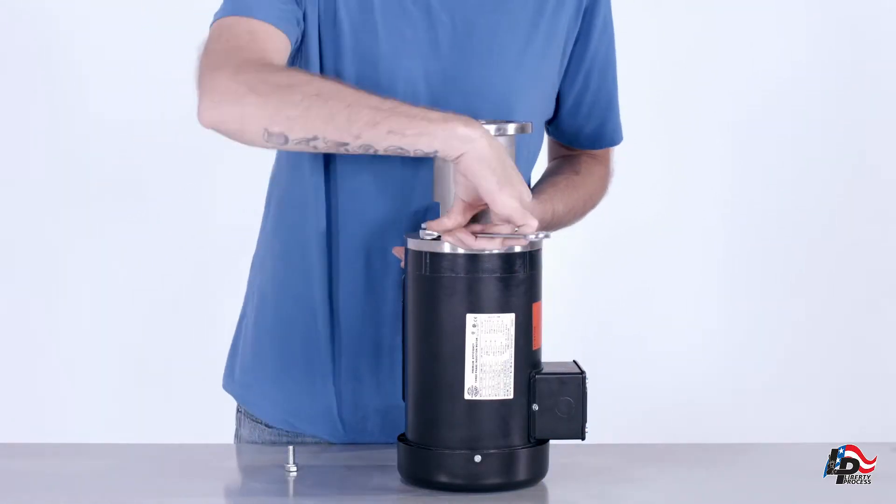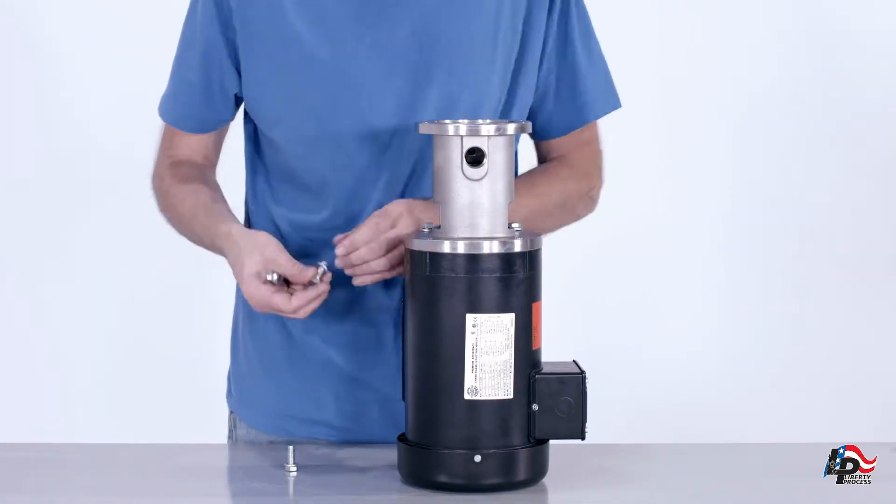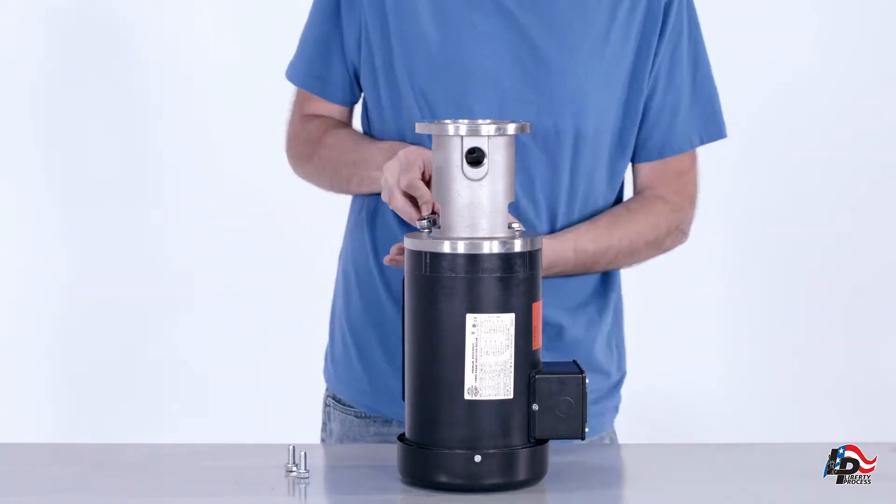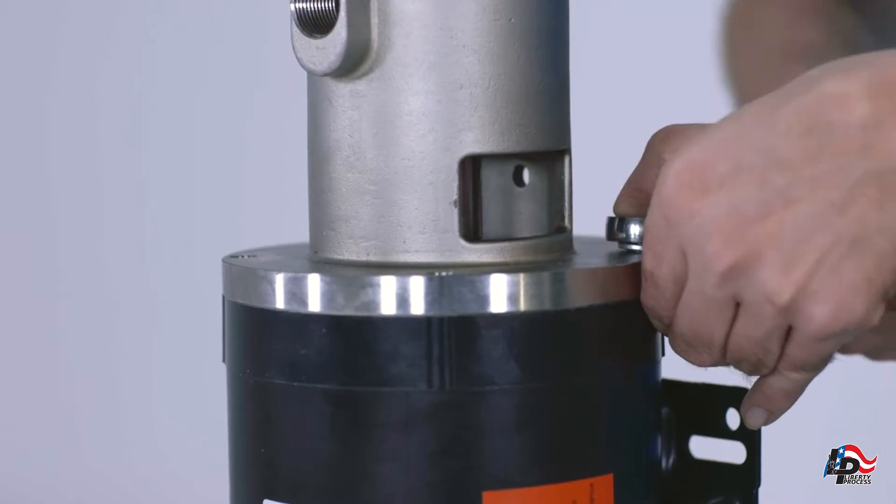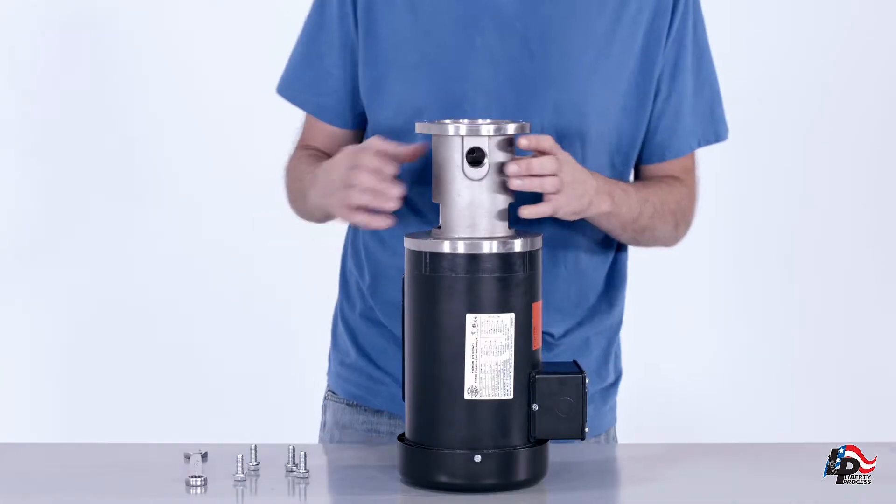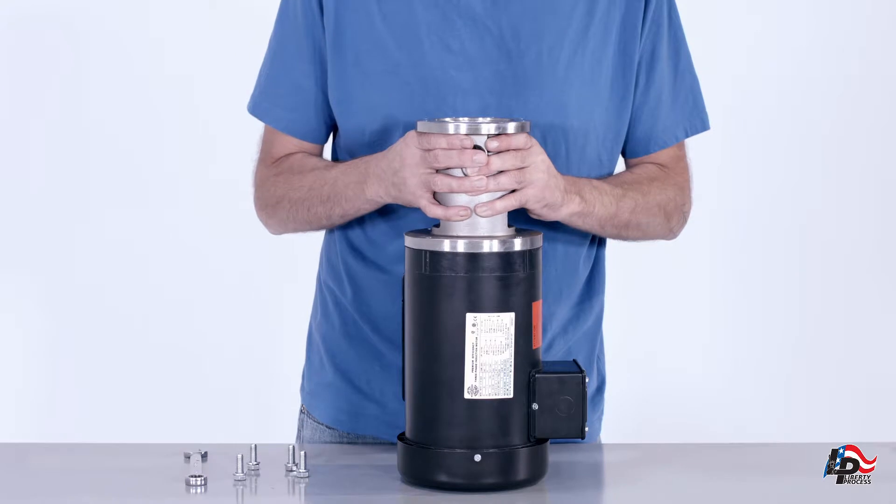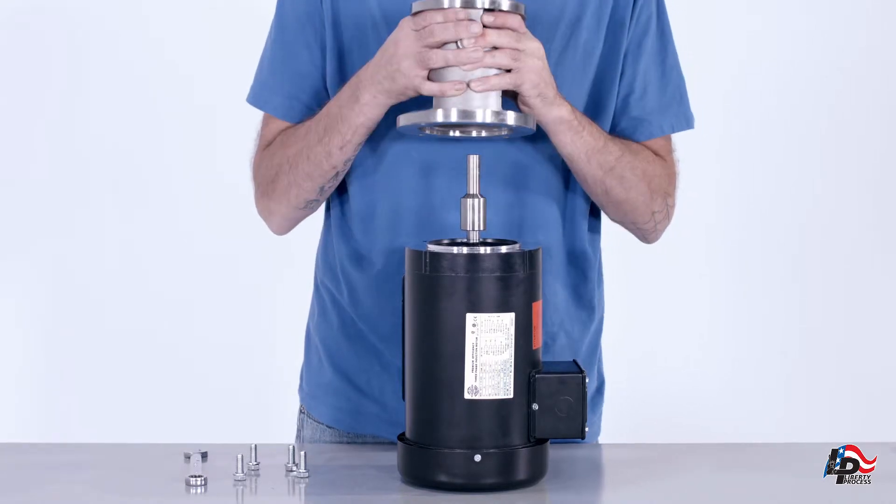The rotating face and the stationary face of the mechanical seal assembly will still be installed in the pump discharge casing. Removing the pump discharge casing from the motor will slide the rotating face of the mechanical seal assembly off the stub shaft, making the rotating face easier to remove.